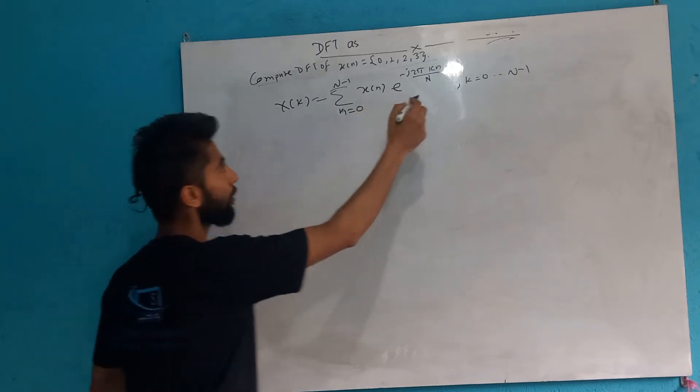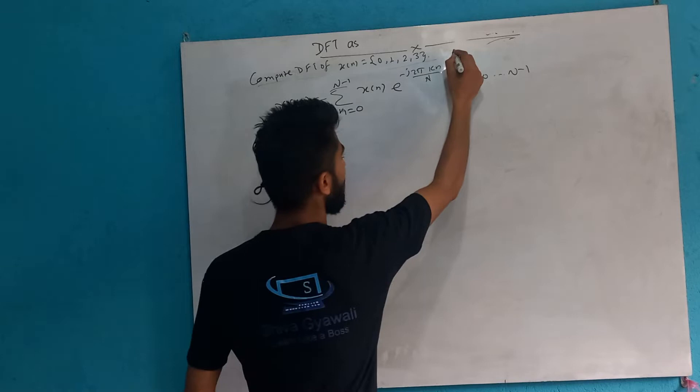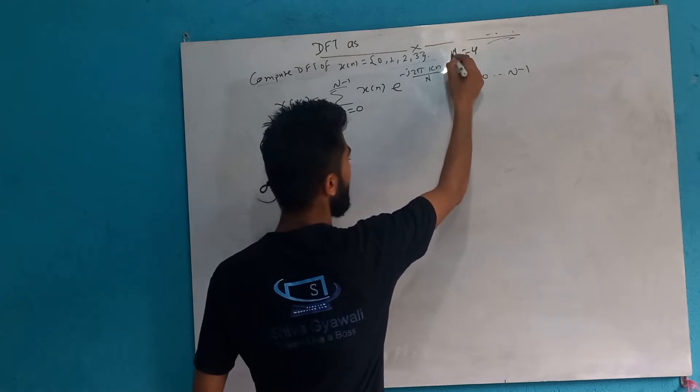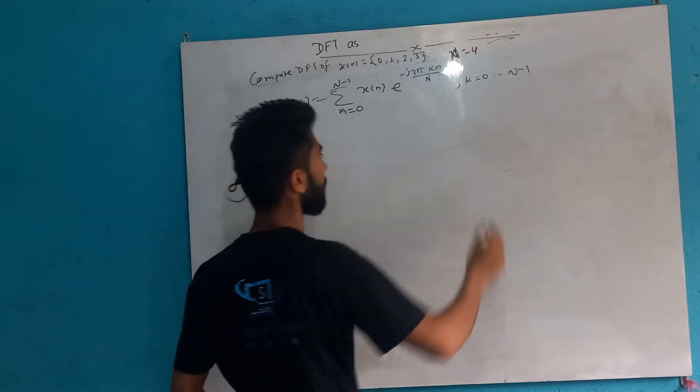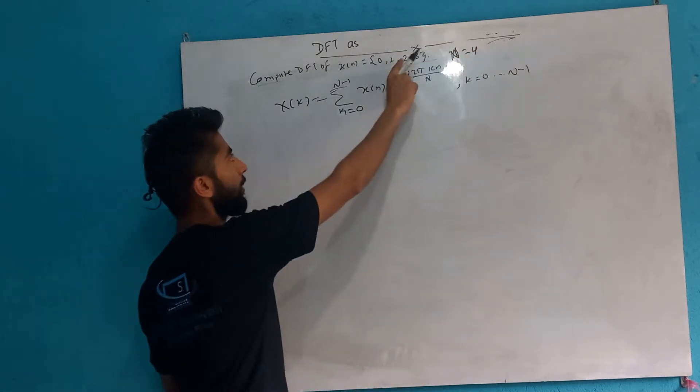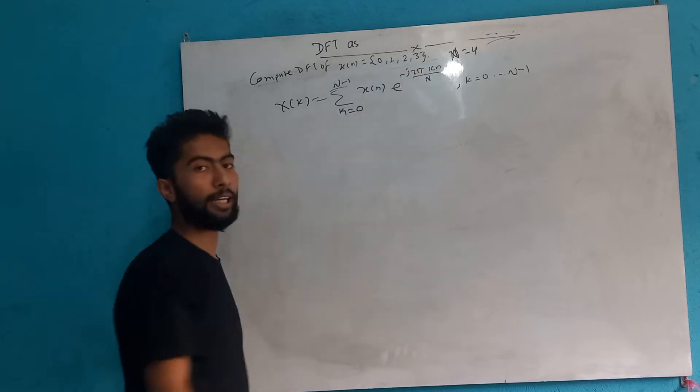The value of N is 4, so our emission values are 0, 1, 2, 3.